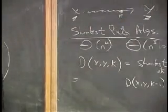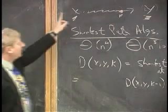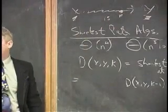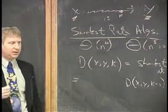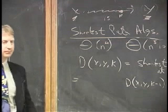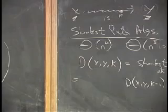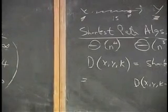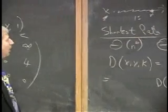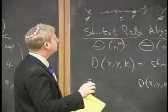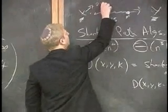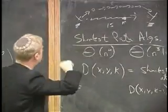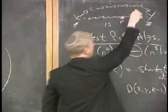One clarification: when we take the minimum over all M, that also includes M equal to Y itself. D(x, Y, k-1) plus W(Y, Y) — which is zero — means: is the best thing we had before (without adding any edge) still the best? That's what ensures we never go worse. We always consider what we had before, because we let M vary and it actually hits Y. That's an important programming technicality — it ensures monotonic improvement.